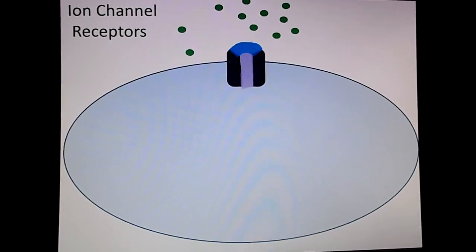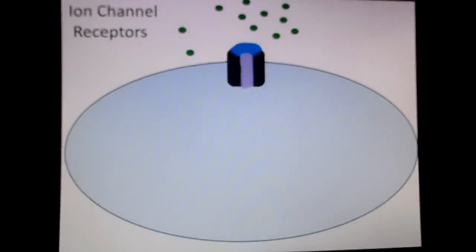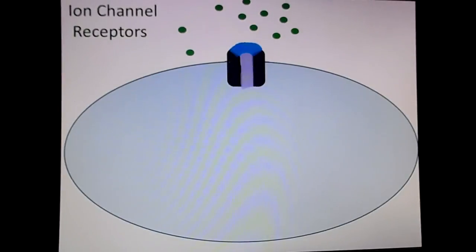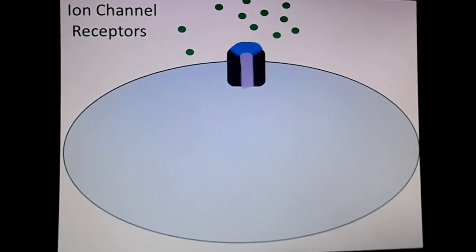Here we have ion channel receptors. Again, this is a membrane receptor protein, and in this type of protein we have a region of it that acts as a gate.